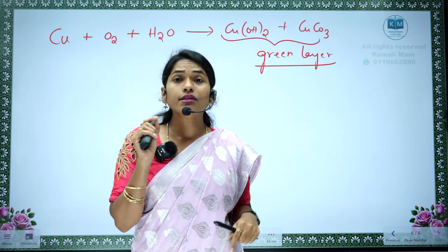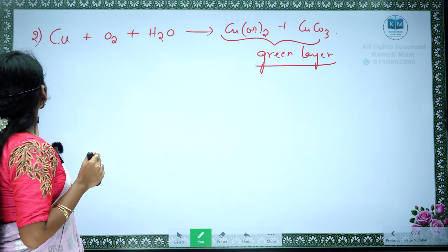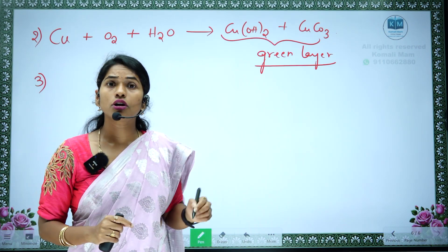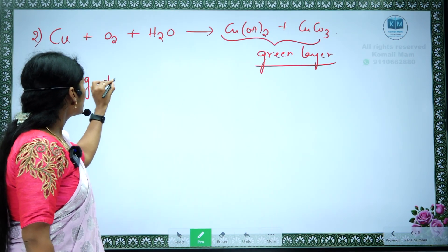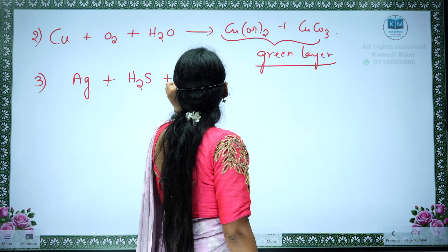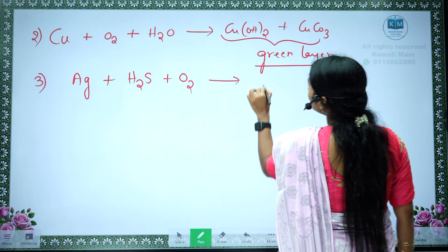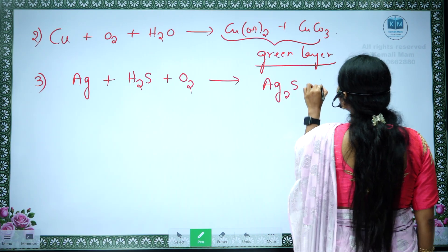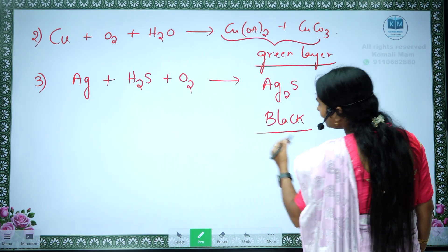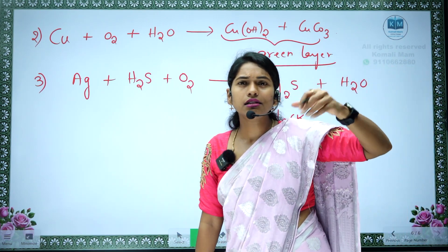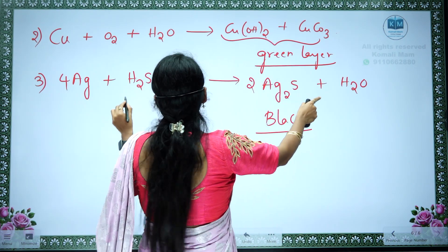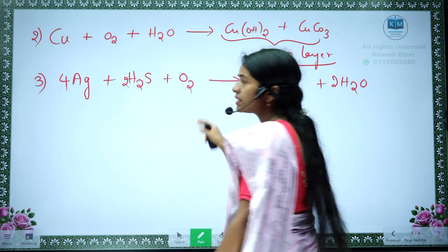Silver objects also undergo corrosion and turn black. Silver reacts with hydrogen sulfide present in the atmosphere and with oxygen in the air, converting into a black colored substance called Ag2S, and water is also formed. So that silver object slightly turns to black color because of this reaction.